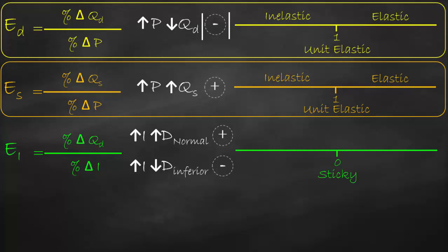The benchmark for income elasticity is zero. If income elasticity equals zero, the good is called 'sticky' — meaning if income changes, demand stays the same. If income elasticity is negative, it means we have a negative relationship and the product is an inferior good. If it's positive, demand increases with income, meaning it's a normal good. For income elasticity, we do not use absolute value — we keep the negative sign.